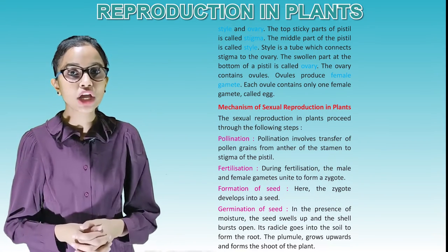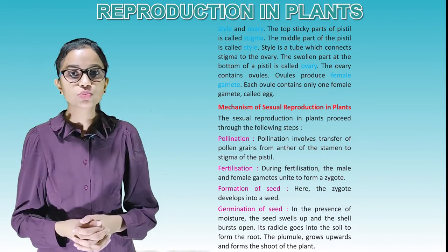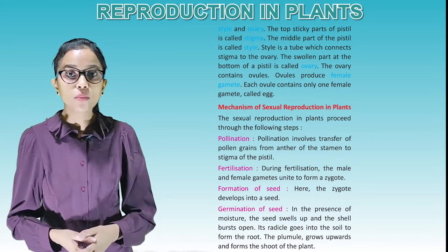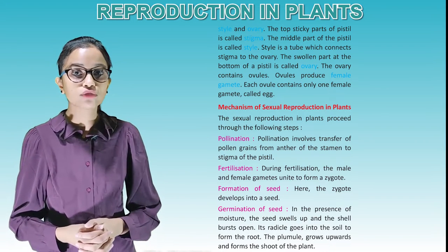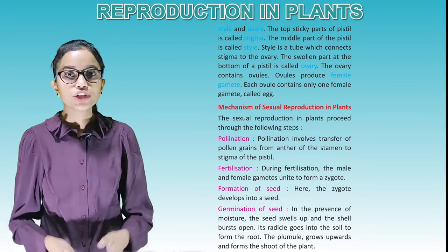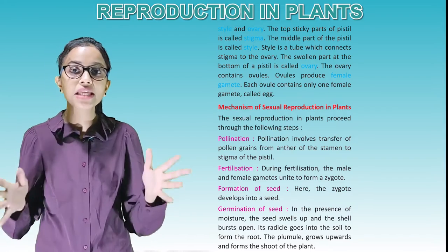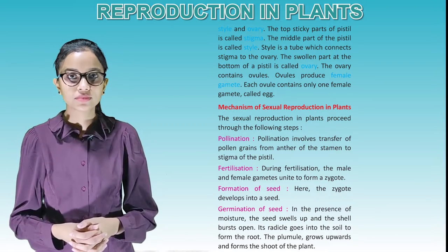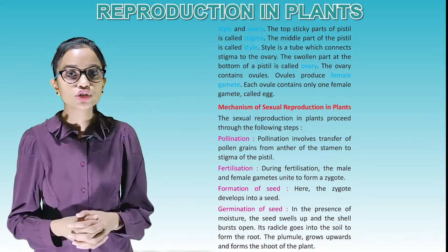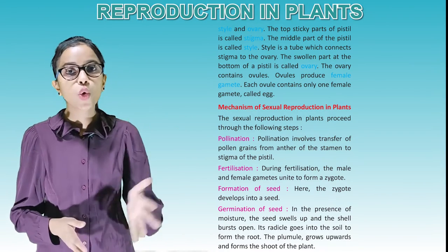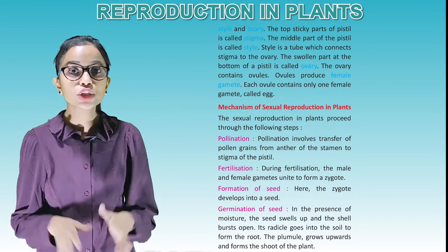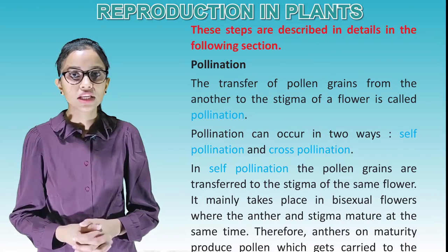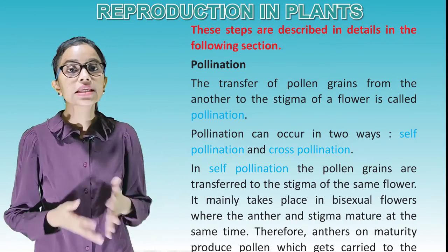The mechanism of sexual reproduction in plants proceeds through the following steps: pollination, fertilization, formation of seed, and germination of seed. Pollination involves the transfer of pollen grains from the anther of the stamen to the stigma of the pistil. During fertilization, the male and female gametes unite to form a zygote. The zygote then develops into a seed. In the presence of moisture, the seed swells up and the shell bursts open — the radicle goes into the soil to form the root, and the plumule grows upwards to form the shoot.